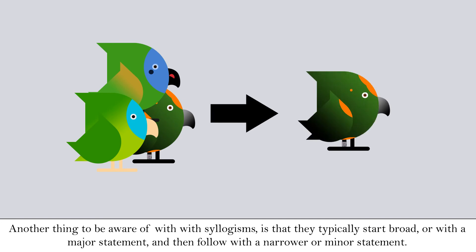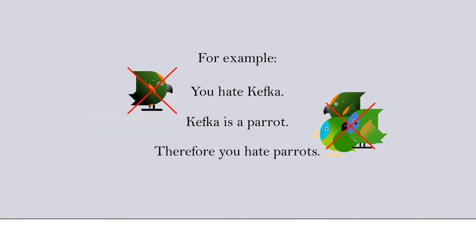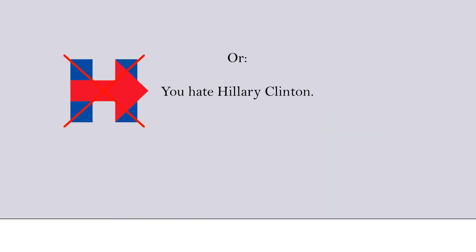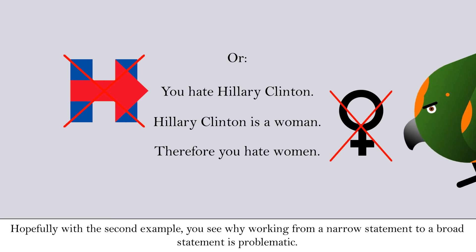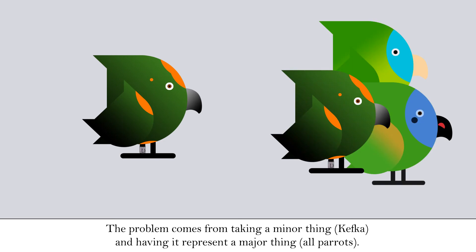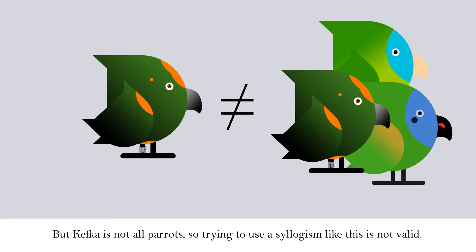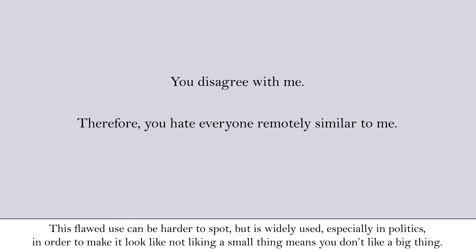Another thing to be aware of with syllogisms is that they typically start broad, or with a major statement, and then follow with a narrower or minor statement. Some people try to reverse this order with less than optimal outcomes. For example: you hate Kefka; Kefka is a parrot; therefore you hate parrots. Or: you hate Hillary Clinton; Hillary Clinton is a woman; therefore you hate women. Hopefully with this second example you see why working from a narrow statement to a broad statement is problematic. The problem comes from taking a minor thing, like Kefka, and having it represent a major thing — all parrots. But Kefka is not all parrots, so trying to use a syllogism like this is not valid. This flawed use can be harder to spot, but is widely used, especially in politics, in order to make it look like not liking a small thing means you don't like a big thing.